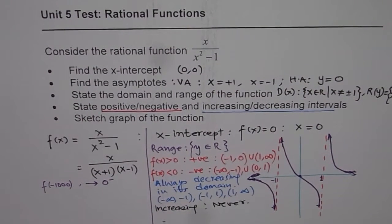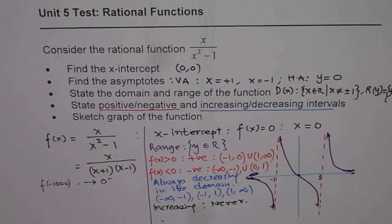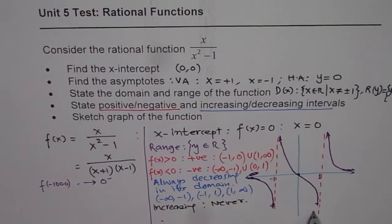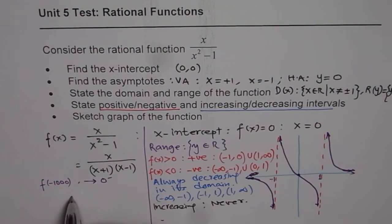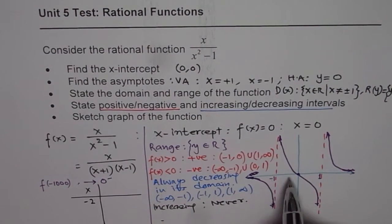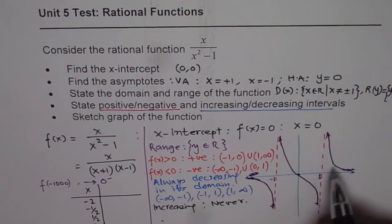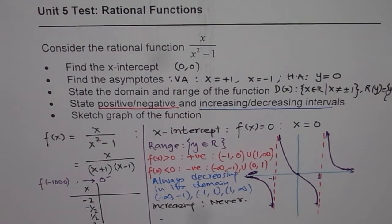This is how you answer this question — it requires good knowledge and understanding of rational functions and their characteristics. To improve graphing accuracy, analyze the behavior near asymptotes or create a table of values. For example, you can use x equals minus 2, minus one-half, plus one-half, and 2 to get additional points. I hope this gives you great practice for your own test. Thank you and all the best.